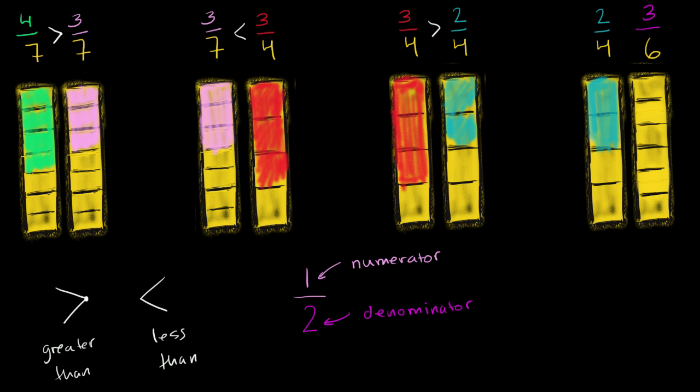And then 3 sixths, we've split our whole into six equal sections. 1, 2, 3, 4, 5, 6. We need to color in three of them. We need to color in three of them. And as you see, we are coloring in the exact same amount of the whole.